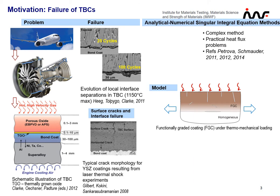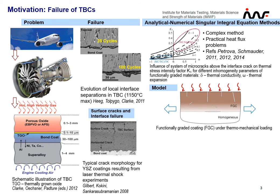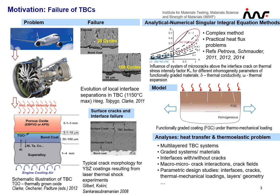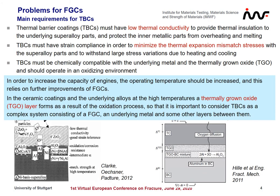Some results were previously obtained for functionally graded coatings on a homogeneous substrate with a crack system. These results were obtained on the basis of the singular integral equation method. The main goal of such investigations is the design of improved thermal barrier coating systems. Some main requirements for thermal barrier coatings are presented. It should be mentioned that at high temperatures, a thermally grown oxide layer forms as a result of the oxidation process, so it is important to consider thermal barrier coatings as a complex system consisting of a coating, an underlying metal, and some other layers between them.